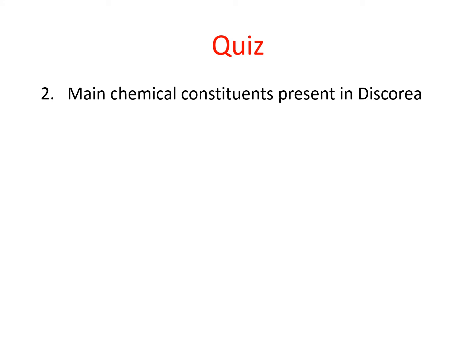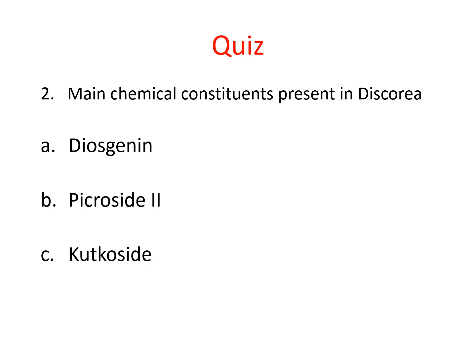The second quiz question is: the main chemical constituent present in Dioscoria is? Options are: diosgenin, picroside, cutcoside, or all of the above. The correct answer is diosgenin.